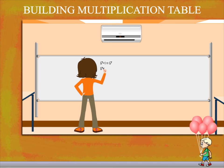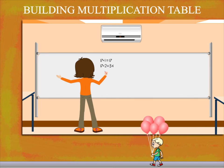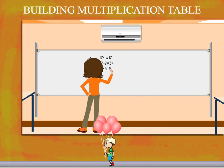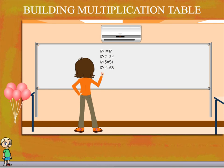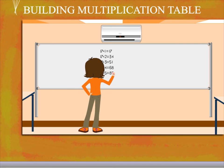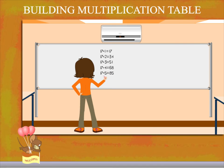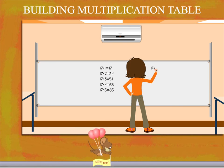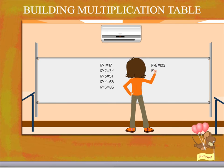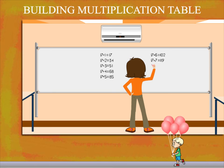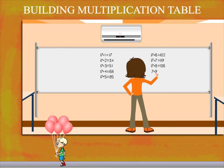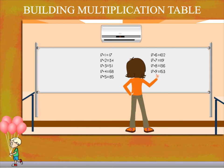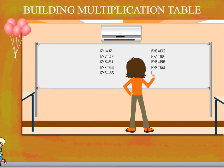Let's see the tables of 17. 17 ones are 17, 17 2s are 34, 17 3s are 51, 17 4s are 68, 17 5s are 85, 17 6s are 102, 17 7s are 119, 17 8s are 136, 17 9s are 153, 17 10s are 170. Really nice!